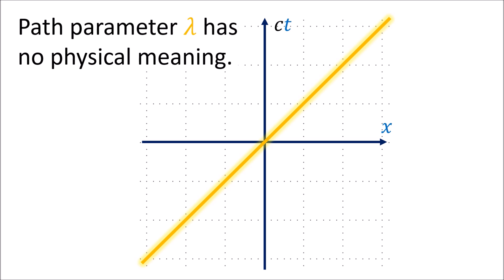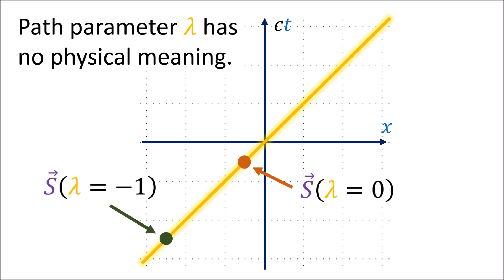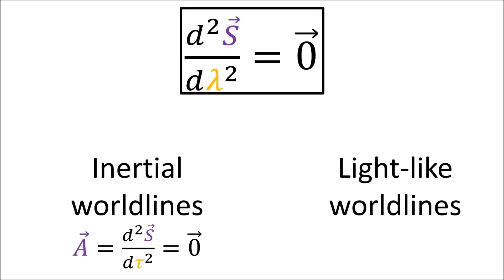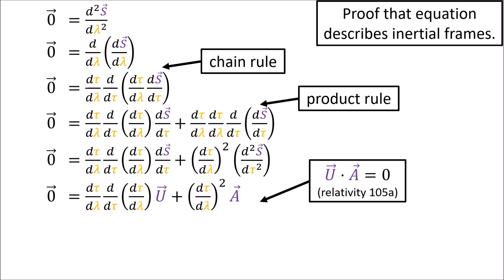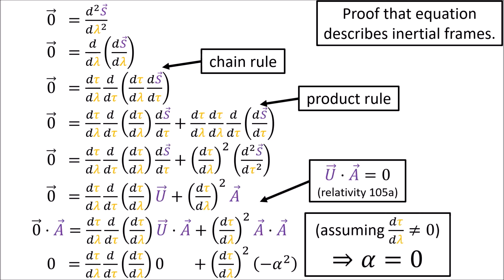The lambda parameter doesn't have to have any physical meaning — it just needs to be able to indicate the path of a light beam in spacetime as its value increases. It turns out that the second derivative of s with respect to lambda equaling 0 describes not only light-like world lines, but inertial world lines as well. We can prove this using chain rule, product rule, and by remembering that the four-velocity u is orthogonal to four-acceleration a, as proved in Relativity 105 part A.